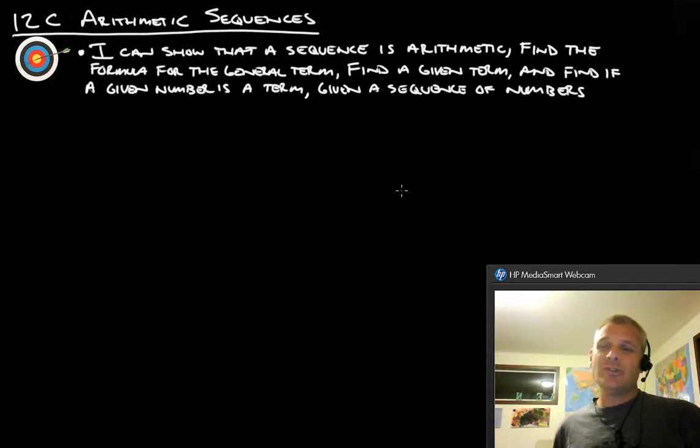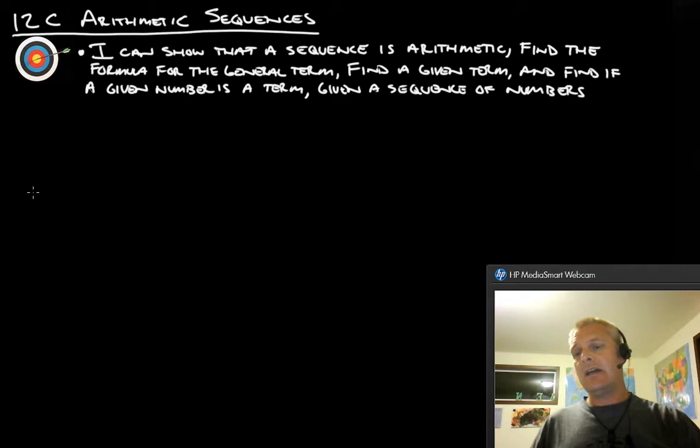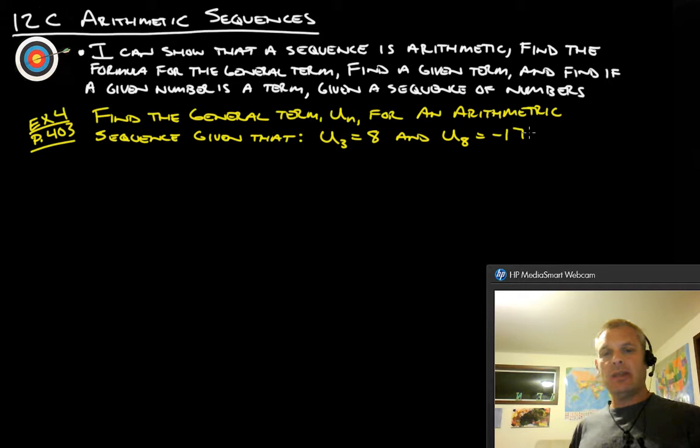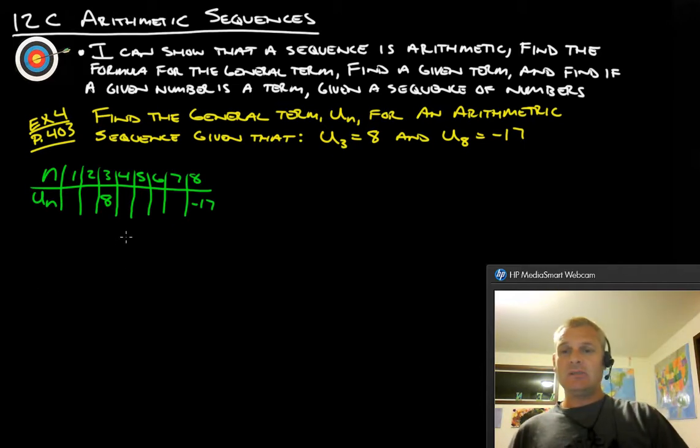Hello, welcome back to the actual conclusion of 12C. I thought the last video would have been the final one, but it took a little longer than I thought, so this is the last example. This is example 4 from page 403: find the general term u_n for an arithmetic sequence given that u_3 is 8 and u_8 is negative 17. We're trying to find the general term when they only give us two terms. They don't give us the first term or the difference, so we're going to have to figure all those things out. First thing you're going to want to do is make a table.